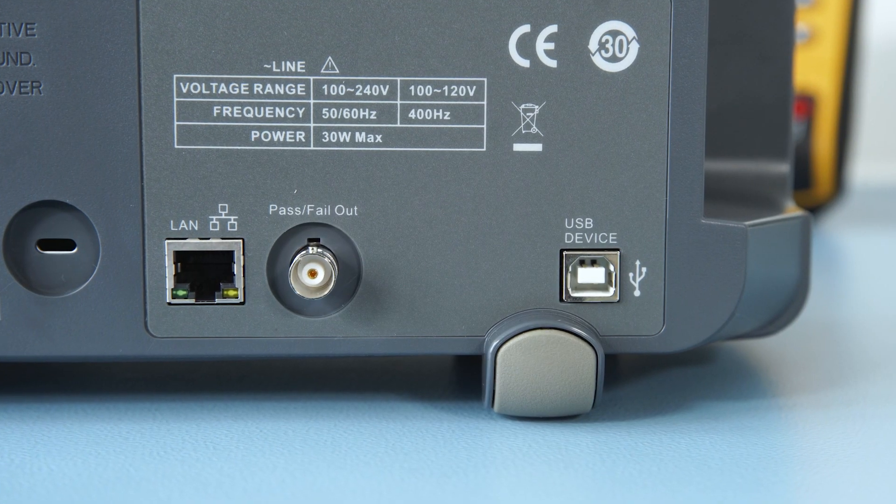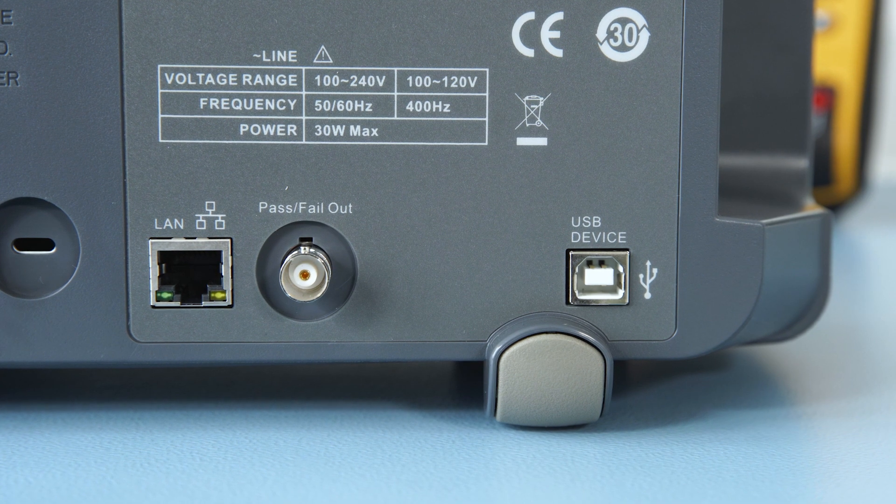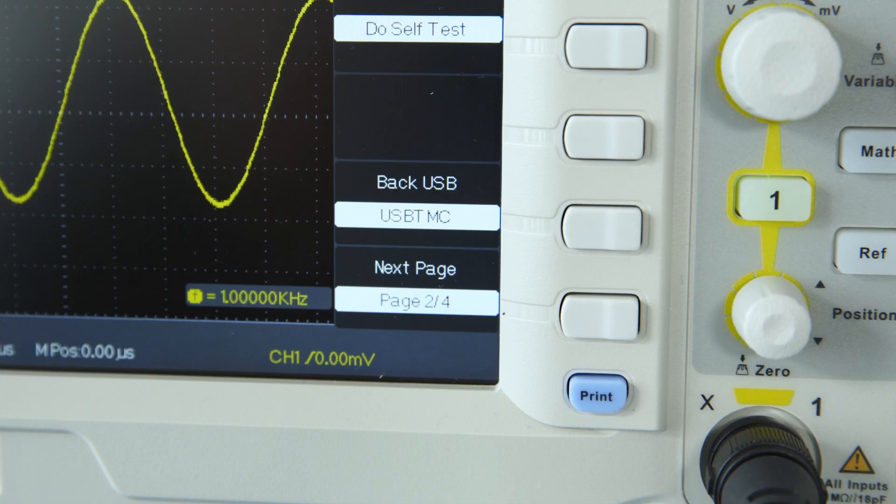The user can also define how to use the back USB port depending on what is connected. If you are using the EasyScope software, select the USB TMC option and connect to the PC. If you have connected a printer and executed the Printer function, select the Printer option.